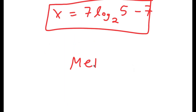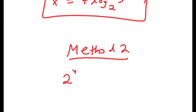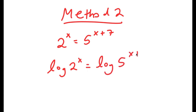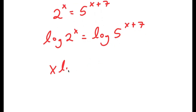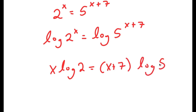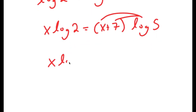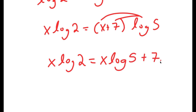For Method 2, my equation was 2 to the power of x is equal to 5 to the power of x plus 7. I'm going to start by taking the log on both sides. So I get log of 2 to the power of x is equal to log of 5 to the power of x plus 7. Using the power rule, I get x times log 2 is equal to (x plus 7) times log 5. Distributing log 5, I get x times log 2 is equal to x times log 5 plus 7 times log 5.